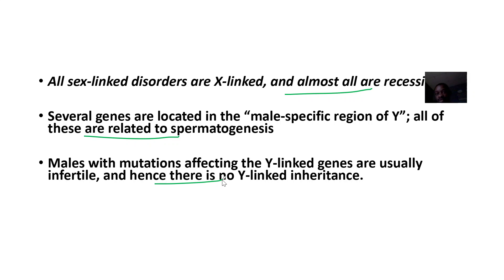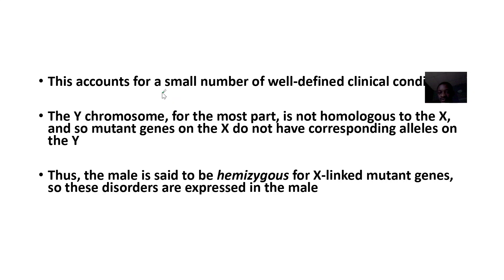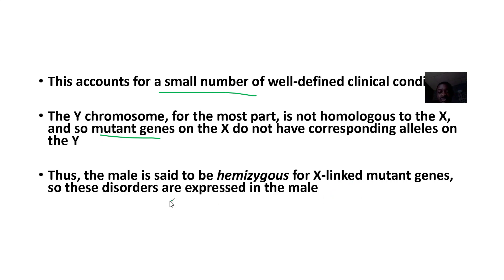For females, they usually have two X chromosomes, so even if one X is affected, the other one is still there. This accounts for a small number of well-defined clinical conditions. The Y chromosome for the most part is not homologous to the X, so mutant genes on the X do not have corresponding alleles on the Y.